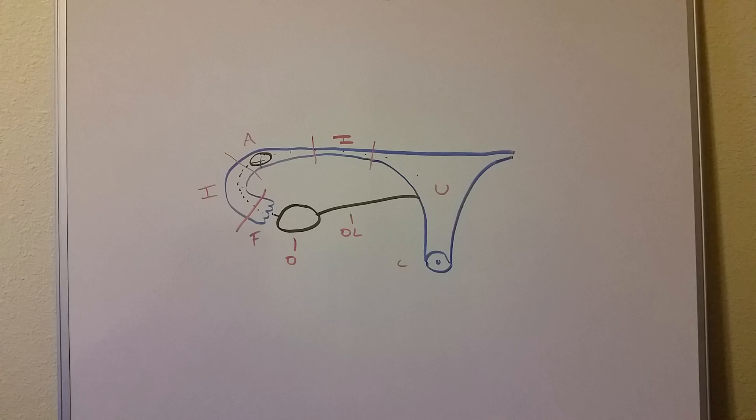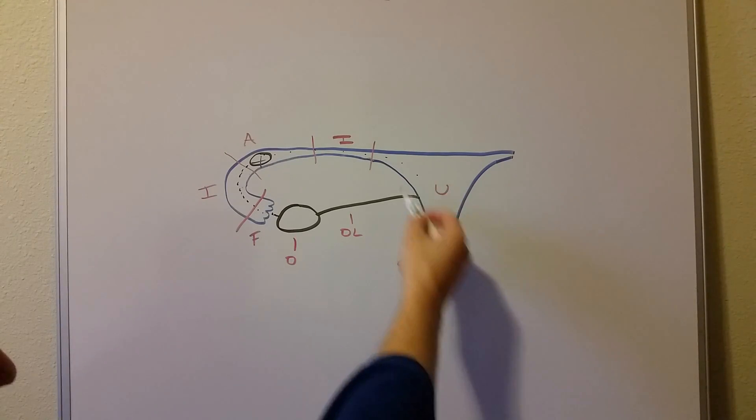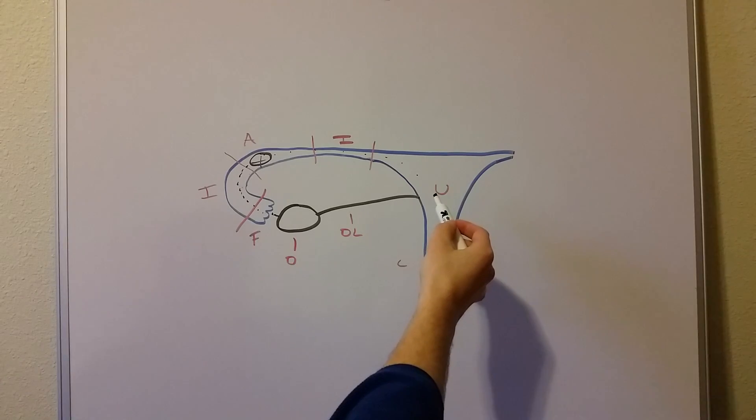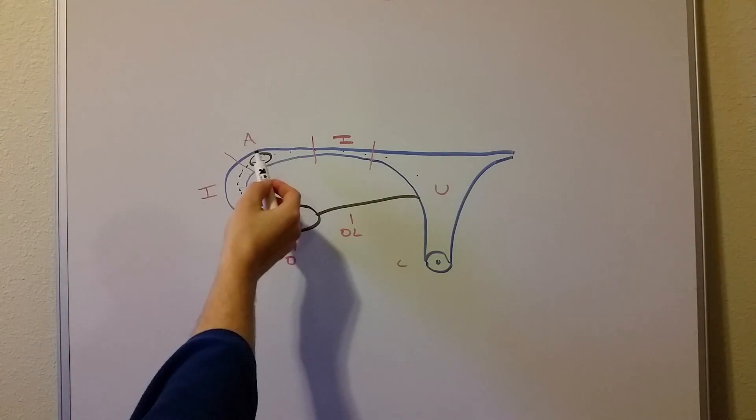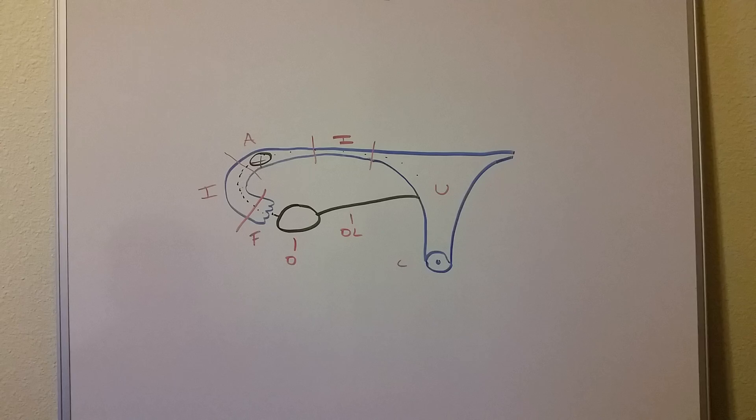Ectopic just means somewhere where it's not supposed to be. So we want it to be inside the uterus. That's where we want our little fetus to develop, or our embryo to develop. Instead, it's developing out here. And the problem is, is when that fallopian tube, the ampulla, it starts this big. And so when that fertilized egg comes through in the beginning, and it implants incorrectly, or ectopically implants, it's not a big deal at first, because it has all this room to grow.